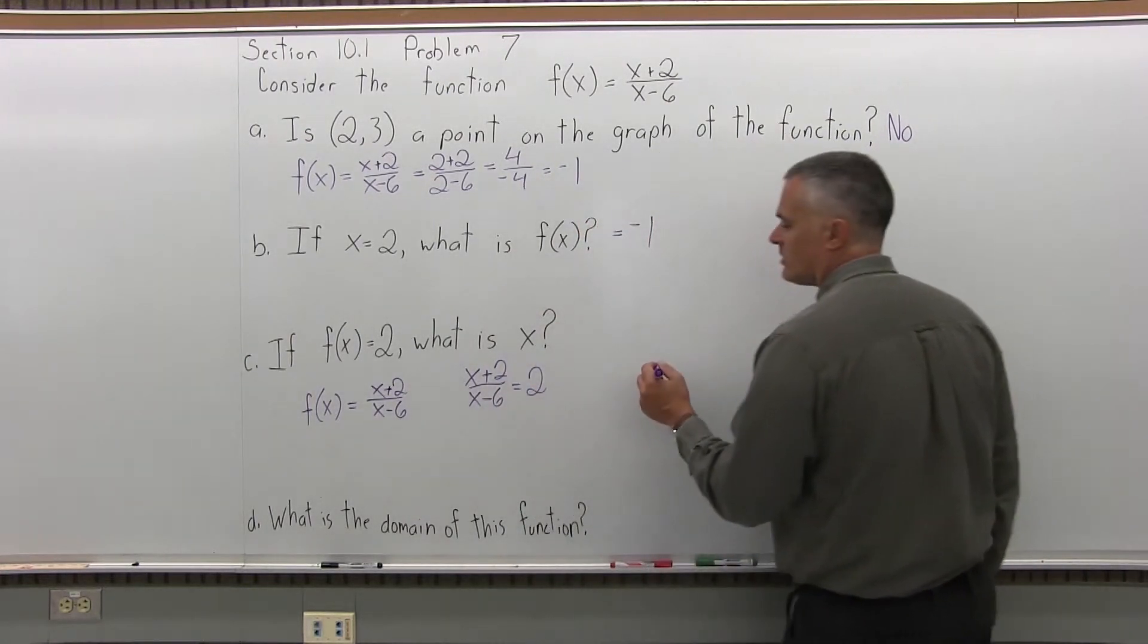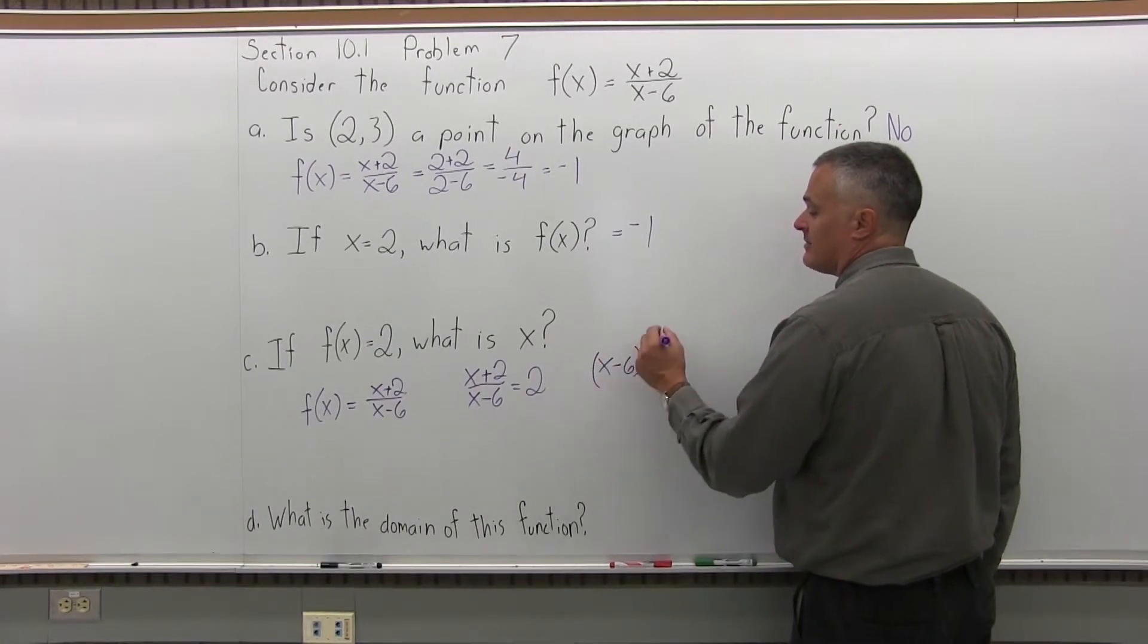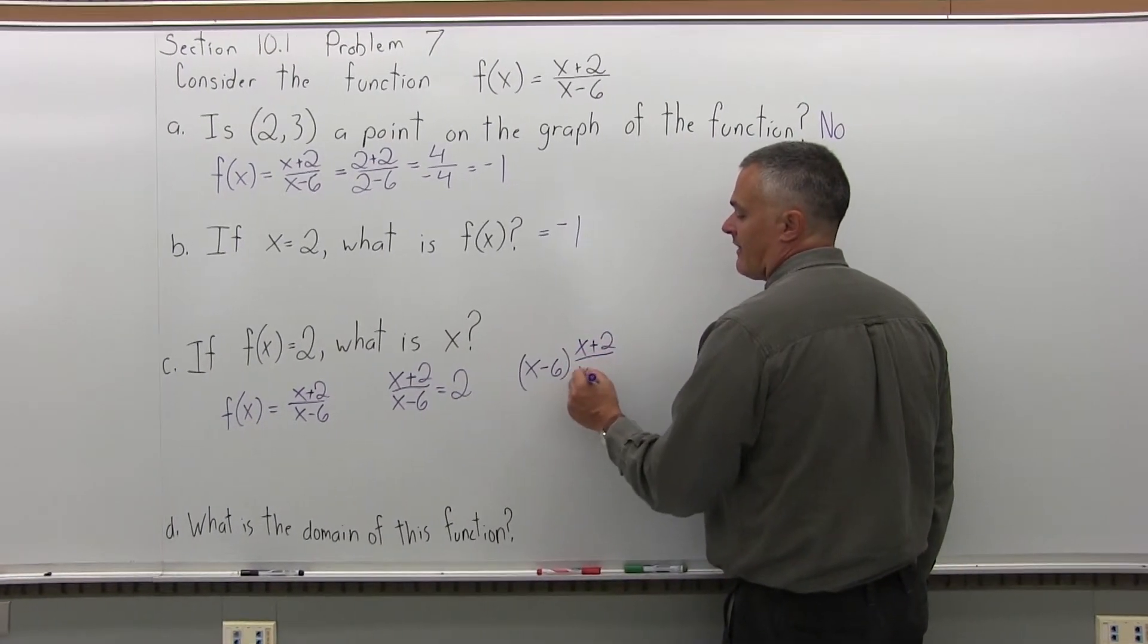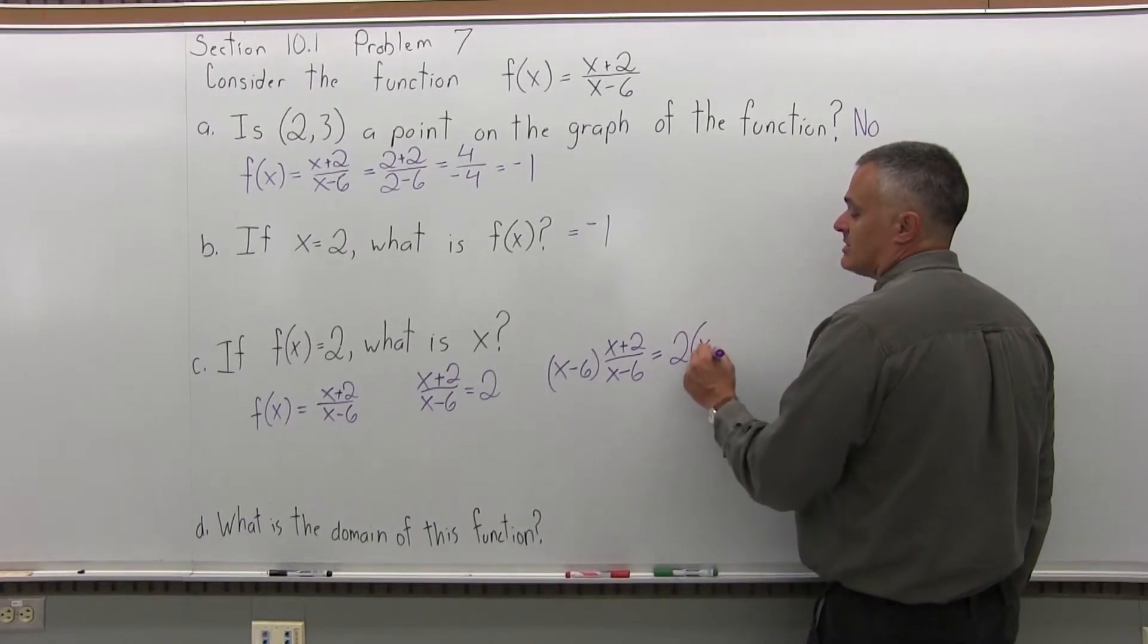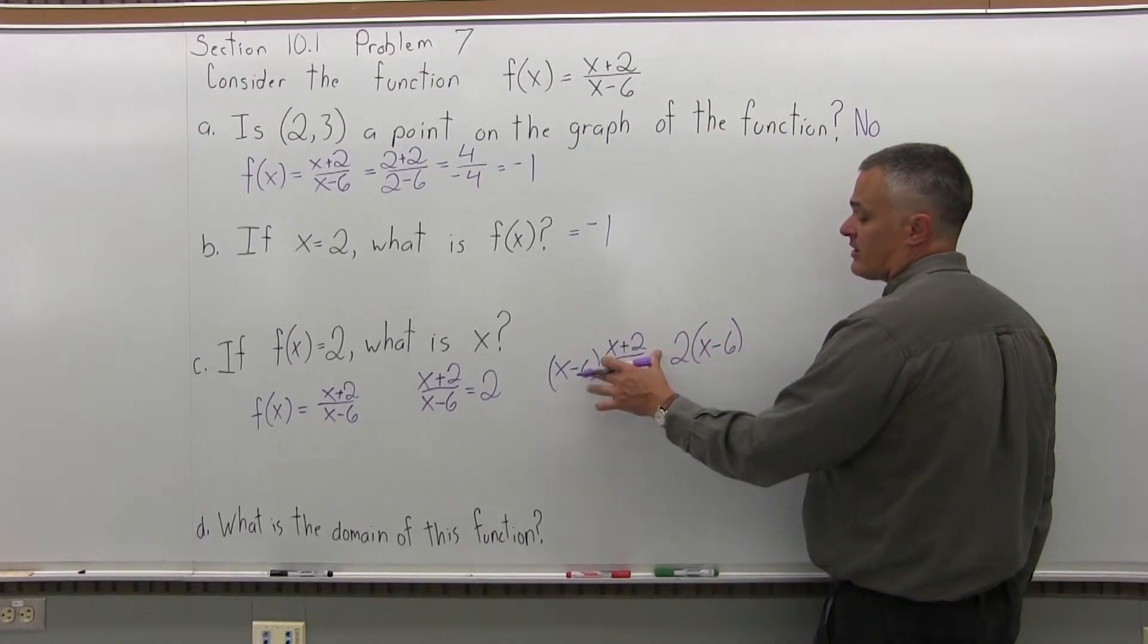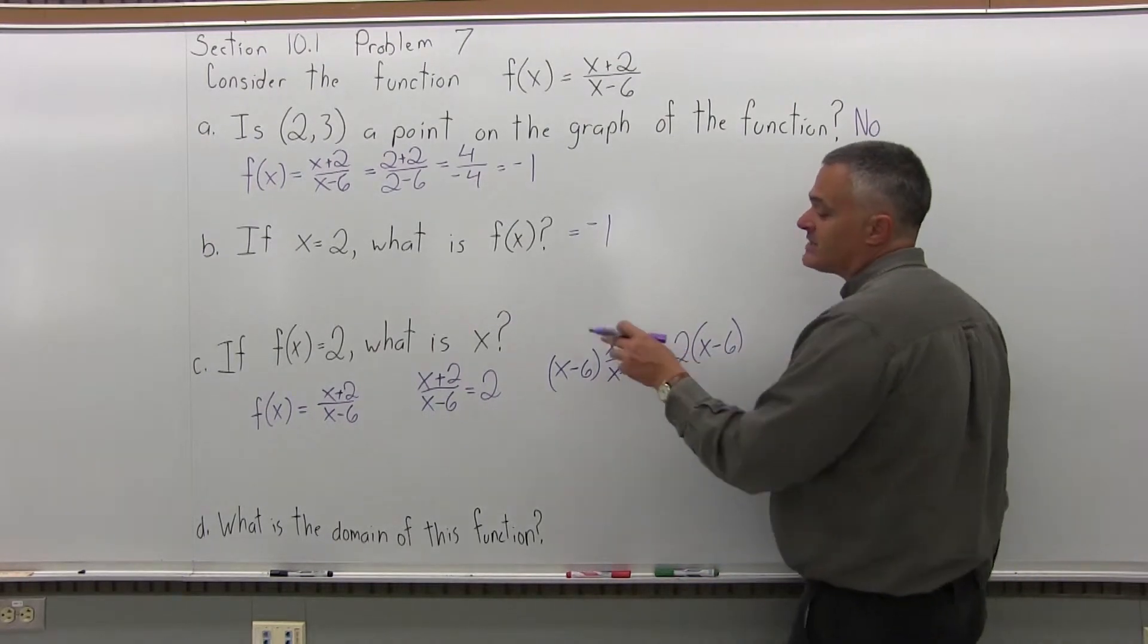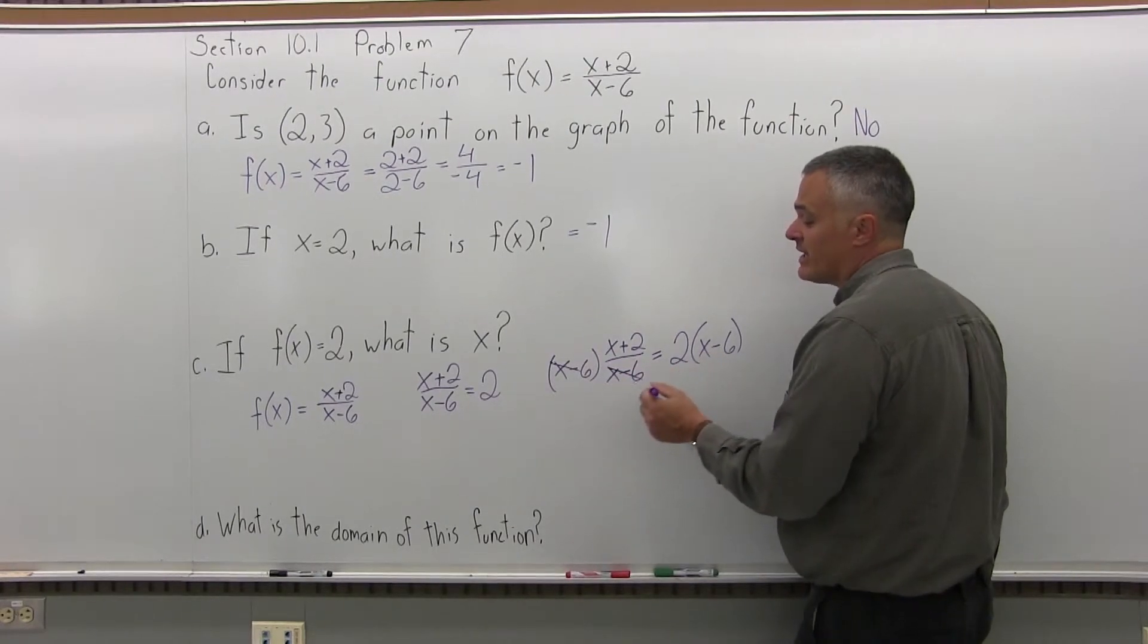So I'm going to do x minus 6 times the left side of the equation, and that will equal x minus 6 times the right side of the equation. I'm multiplying an equation by the same thing on both sides. On the left, I have x minus 6 times some stuff over x minus 6. The x minus 6s will cancel, leaving me with x plus 2 on the left side.